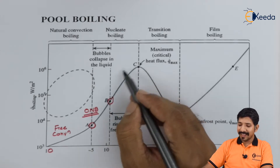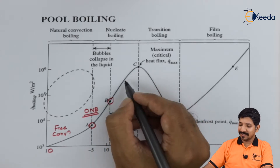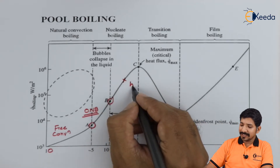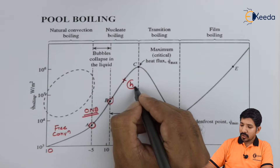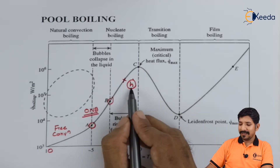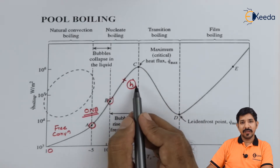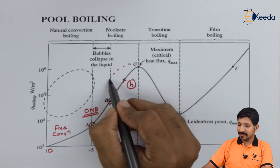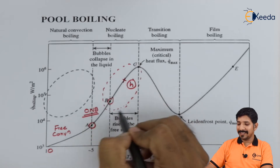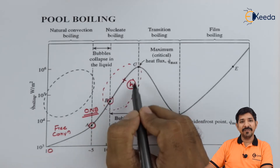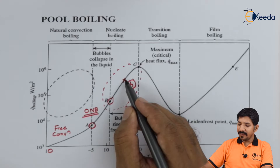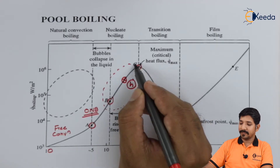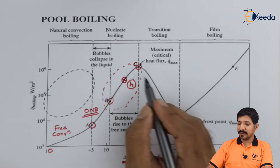In this region, somewhere around here, the value of the heat transfer coefficient is maximum. So if we want the heat transfer coefficient to be maximum, we should stay near this region. This region is what they call the prime region for nucleate boiling, but the difficulty lies at point C.